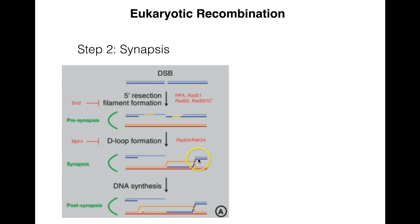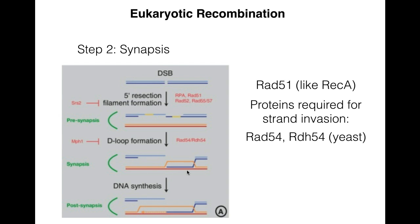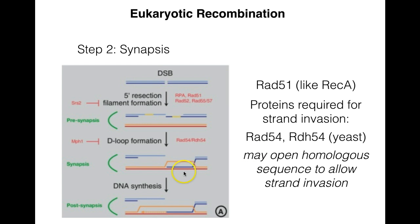Step two of eukaryotic recombination is synapsis — D-loop formation and invasion of the strand into the homologous strand. RAD51 is involved in pre-synapsis, and RAD54 and RDH54 are involved in synapsis. RAD51 acts like RecA in prokaryotes to facilitate strand invasion. RAD54 and RDH54, which are yeast proteins, appear important for unwinding to open the homologous sequence and allow strand invasion to occur.